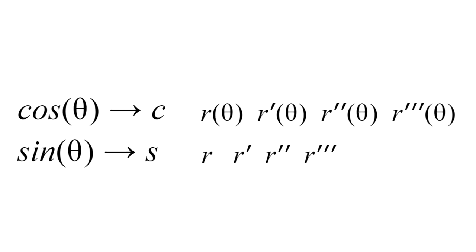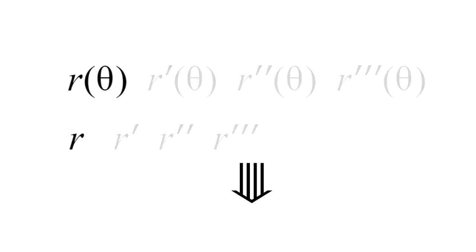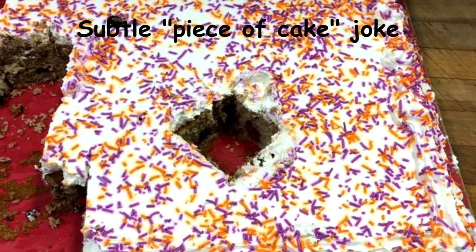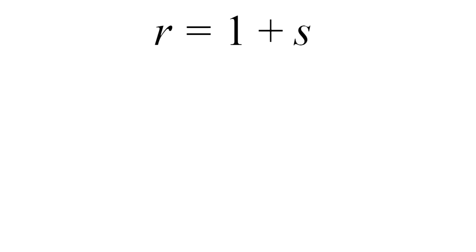After we convert our variables, we are free to evaluate the derivatives of our polar function, which in shorthand is written as r equals 1 plus s. These three derivatives are fairly simple because we are just differentiating trig functions. Doing so will result in the derivatives of r prime equals c, r double prime equals negative s, and r triple prime equals negative c. And so we can wrap it up for step 1.